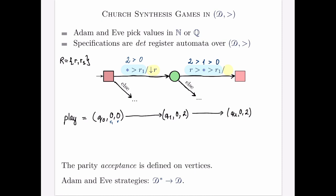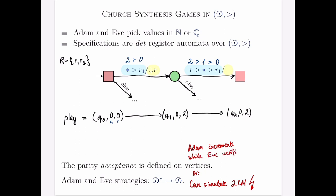In such games, the strategies of Adam and Eve are mappings from sequences of data values of the opponent to the next chosen data value. These games are very expressive. For the case of the domain of natural numbers, such games can simulate two-counter machines, and therefore solving such games is undecidable. It is easy to see how such games can simulate two-counter machines: Adam increments while Eve verifies that Adam increments the counter correctly.